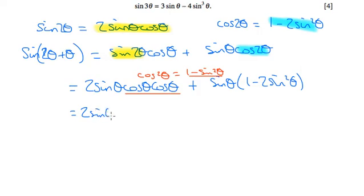So I've got 2 sine theta times 1 minus sine squared theta plus what we have here, sine theta times 1 minus 2 sine squared theta.